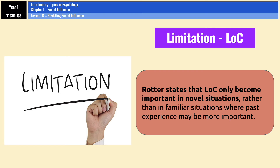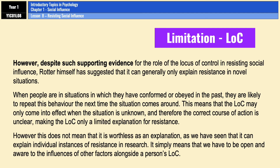The final evaluation point is a limitation of the locus of control: it is a limited explanation for resisting social influence. Rotter himself says the locus of control is only important in novel situations rather than familiar ones, because in a familiar situation past experience may be more important than locus of control. So if you've conformed or obeyed in a situation before, you're likely to do so again, and locus of control becomes less important. This makes it a limited but not worthless explanation — we need to be aware of other factors alongside locus of control.